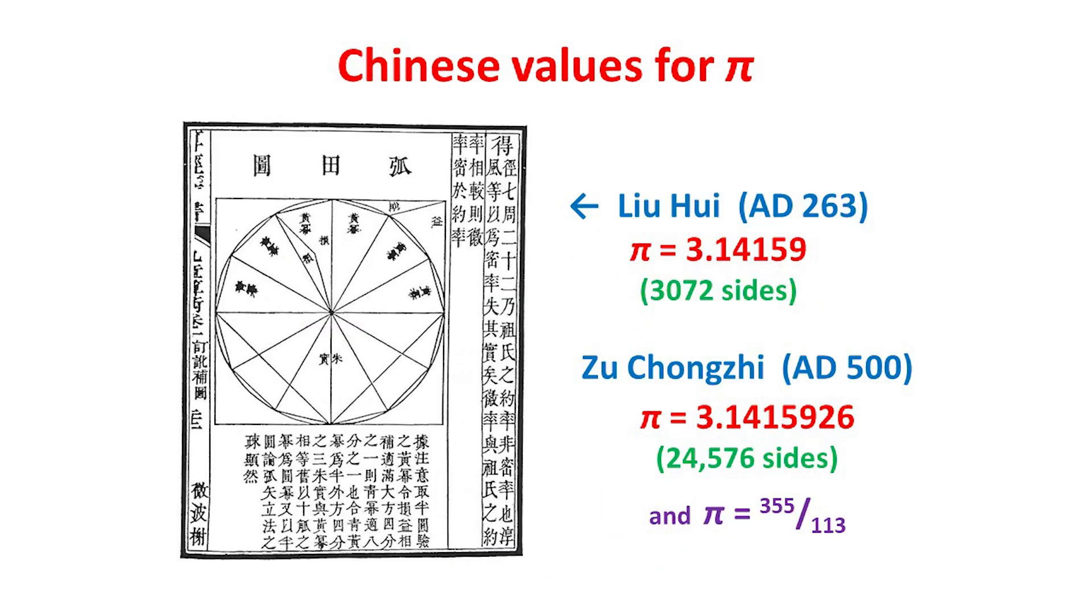The scene then moved to China. Around the year AD 263, Liu Hui continued the Greek method of approximating by polygons, doubling the number of sides from 96 to 192, 384, and so on, up to 3,072 sides, eventually obtaining an estimate for pi of 3.14159.